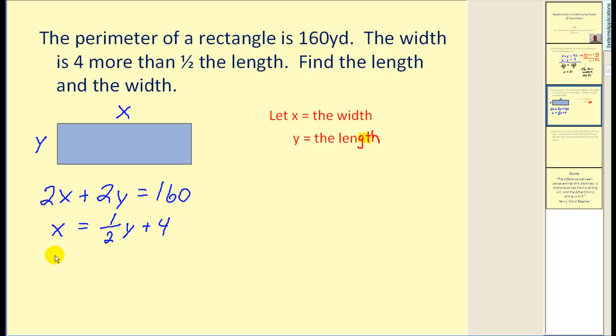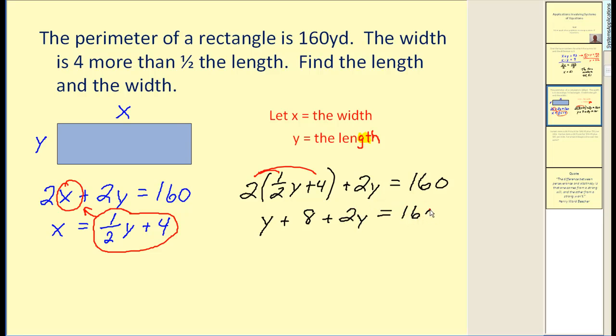Here's our system of equations. The method that sticks out here for me would be substitution since this is already solved for x. So wherever we see an x in the first equation, we can replace it with one-half y plus 4. So let's go ahead and do this substitution and then solve the resulting equation. So we would have 2 times, instead of x, one-half y plus 4 plus 2y equal to 160. Let's distribute and solve for y.